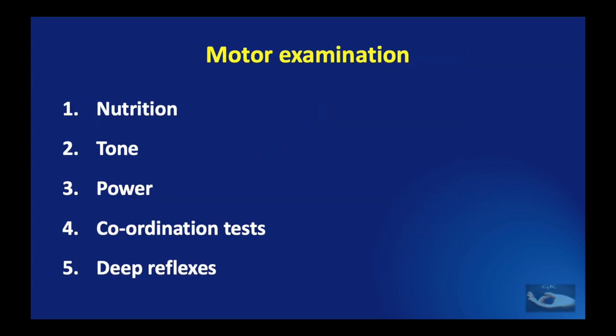We shall begin the assessment of the peripheral nervous system with the motor examination. The motor examination consists of five important parts: assessment of nutrition, assessment of tone, the power of the muscles, coordination tests, and deep reflexes.